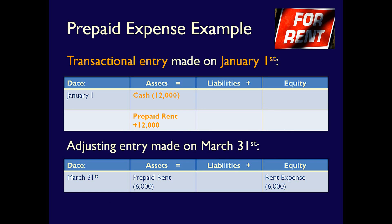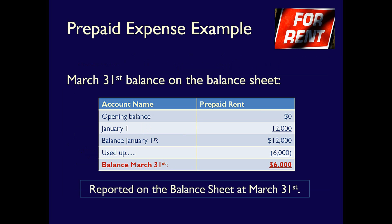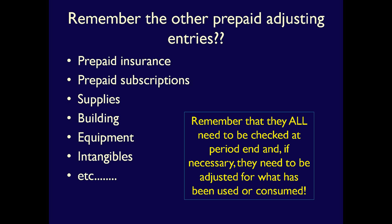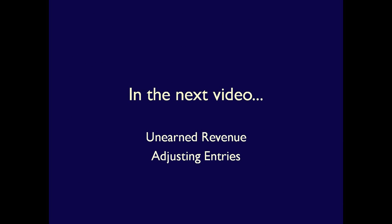Let's look at both entries together. The first entry is a transactional entry because it's an exchange with a third party and includes a paper trail like an invoice — it's an external transaction. The second entry is an adjusting entry because it adjusts the accounts before we publish the financial statements; it's an internal entry with no paper trail, made to recognize use or consumption. What would show up on the balance sheet? Only the balance at March 31st, which will be $6,000, would show up under current assets. Remember that many other accounts will need to be adjusted every reporting period. Adjustments can be made monthly, quarterly, or annually, depending on the company. That's it for prepaid expenses. In our next video, we'll be focusing on unearned revenue adjusting entries.